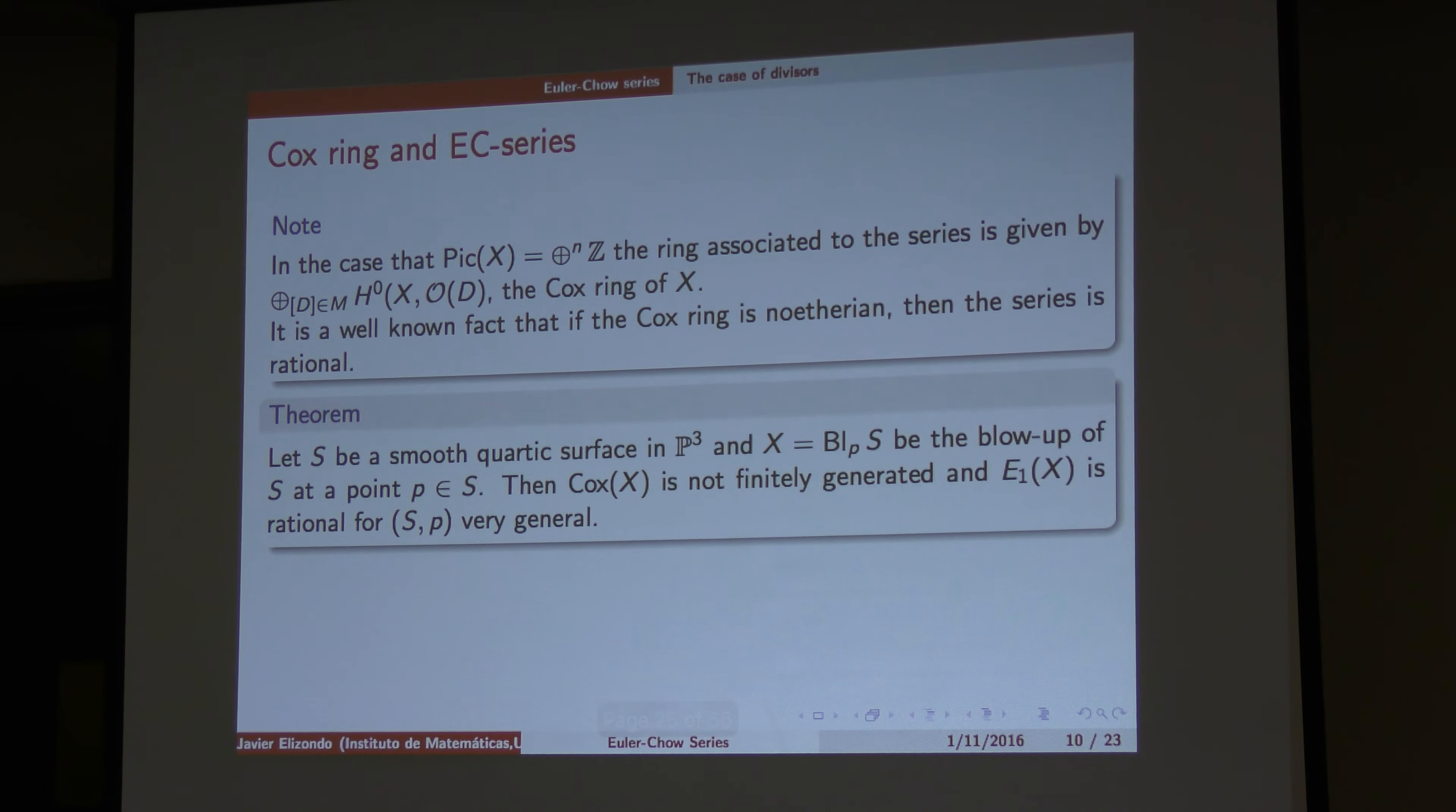There is an example, but the other way around is not true. When you have a smooth quartic surface in P3, and you take the blow-up in a point, then the Cox ring is not finitely generated, however the series is rational.